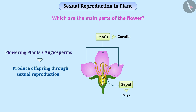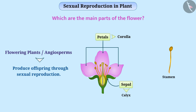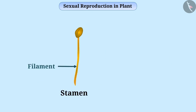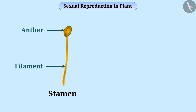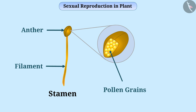Within the circle of petals in the flower, you will see some thin tubes, the top of which is inflated. Each of these is the male reproductive organ of the plant called stamen. The long thin tube-like part of the stamen is called the filament, and the inflated upper part is called the anther. The anther generates pollen grains and carries them within it. Pollen grains are generally yellow.